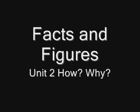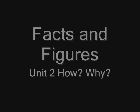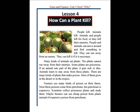Unit 2, Lesson 4. How can a plant kill? People kill. Animals kill. Animals and people kill for food, or they kill their enemies. People and animals can move around and find something to kill. They can run away from an enemy. They can kill it if it is necessary.